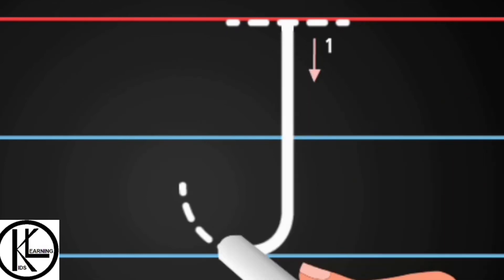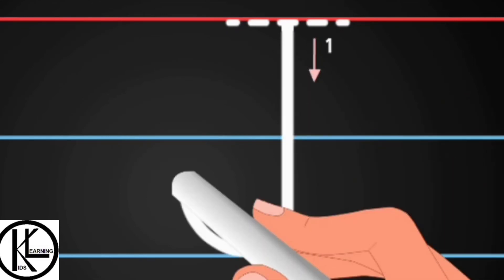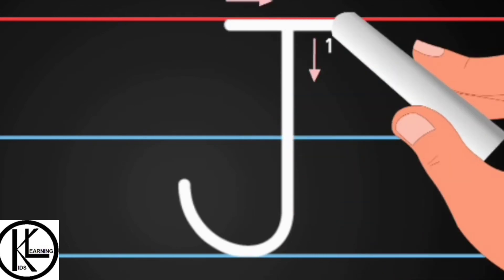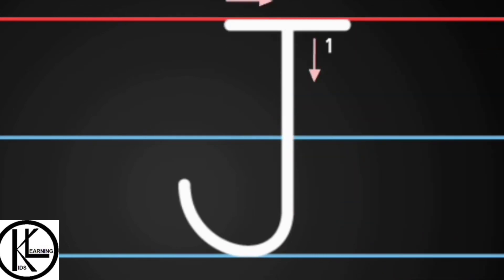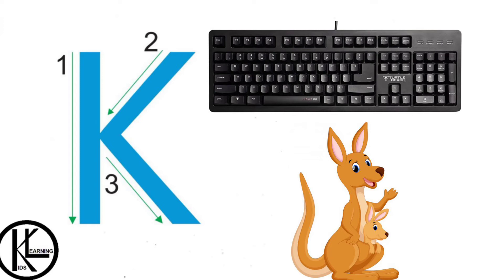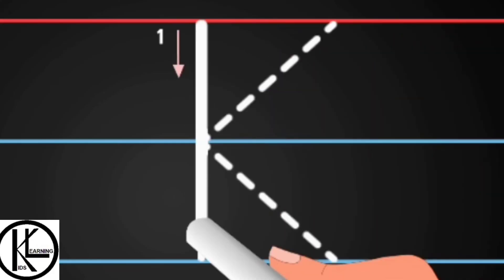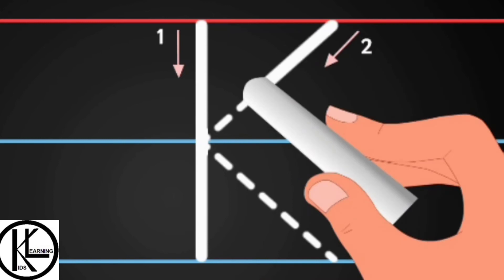This is letter K. K says 'k k', kangaroo. And K is for keyboard. Now let's see how to write letter K. First we have to make a standing line and then a slanting line.